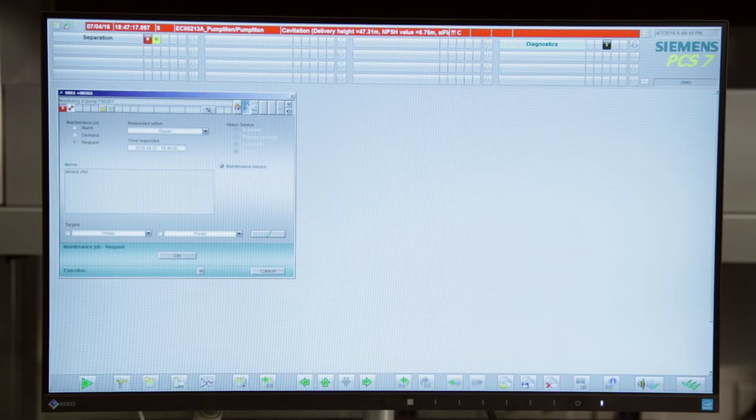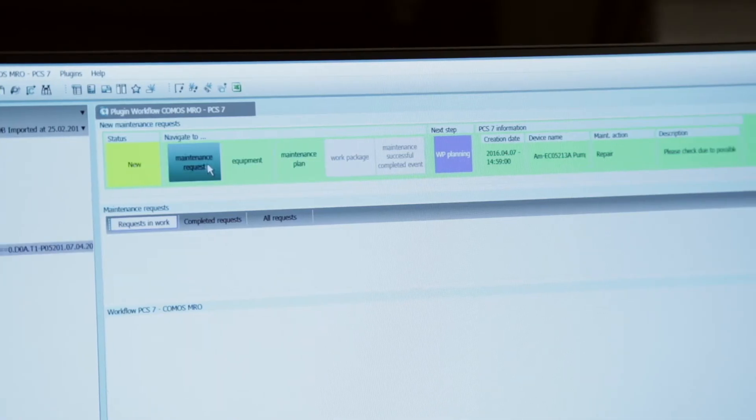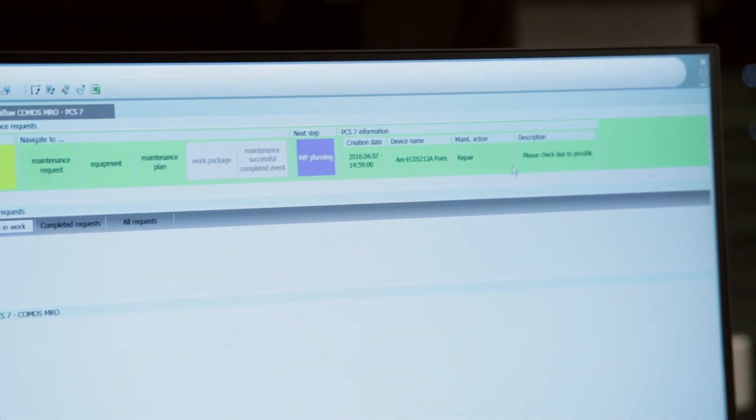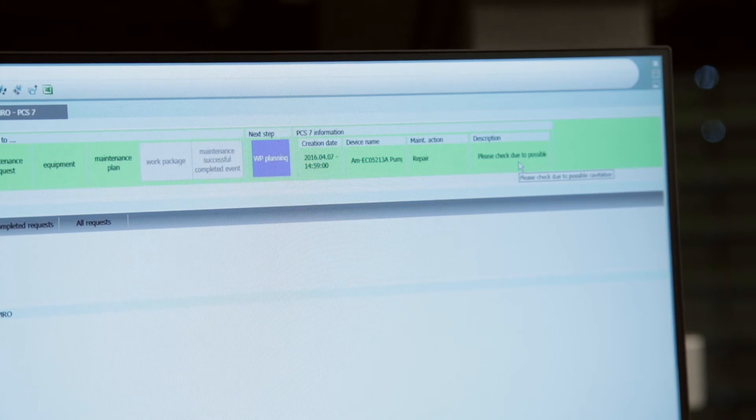The operator issues a maintenance request for the relevant pump via the integrated maintenance station. The maintenance engineer subsequently receives the maintenance request and can plan the upcoming execution for maintenance or repair of the pump and make any necessary preparations for carrying out procedures.